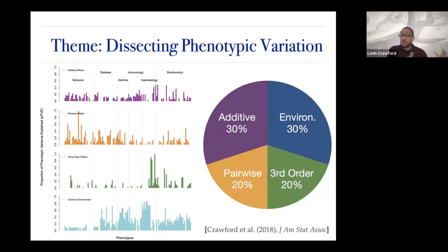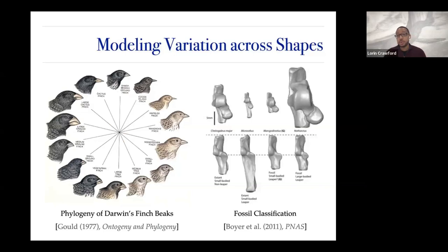Today's talk will ask this question of dissecting phenotypic variation, but instead of asking this on a molecular scale, we're asking this across collections or panels of shapes. You can think about a phenotype as a collection of beaks from different finches, or a collection of heel bones, and understanding the morphological variation that might exist across these heel bones across primates. We're going to build physical models to ask questions about how we dissect this phenotypic architecture.